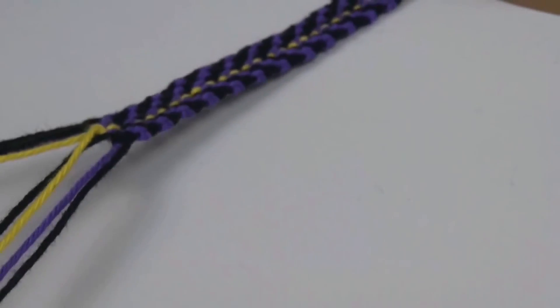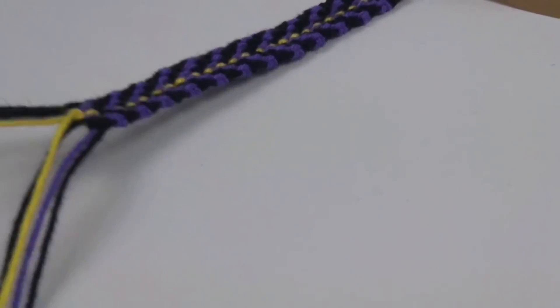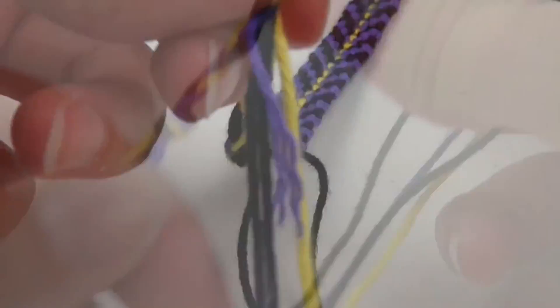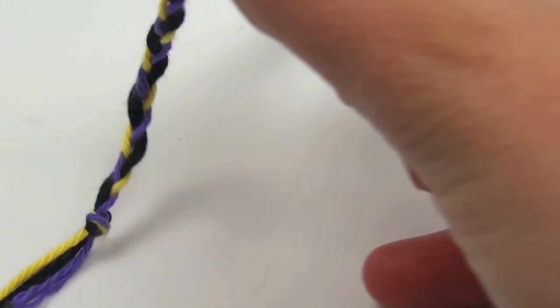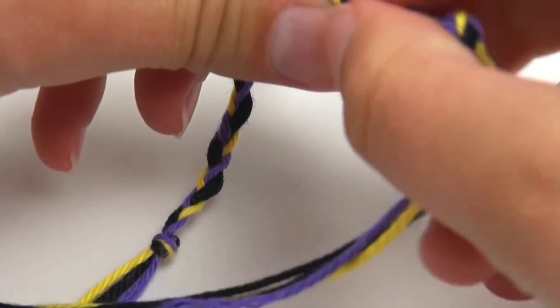I hope you enjoyed our video. If you did, then please subscribe to our channel down below for free, and you'll always be the first one to be informed about new videos. To finish this bracelet off, we're going to make a little braid from the end bits, and then we can connect it to the beginning and place it around our wrist.